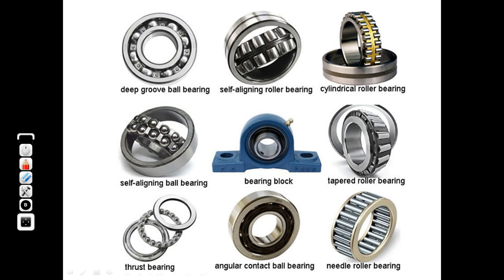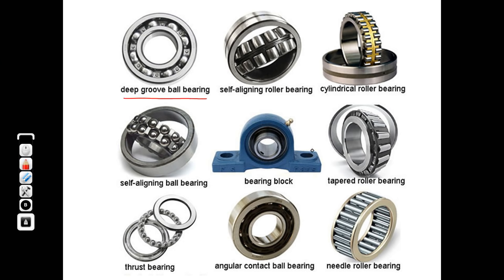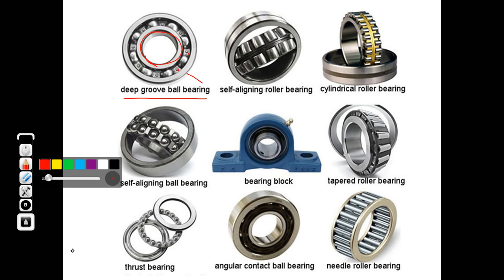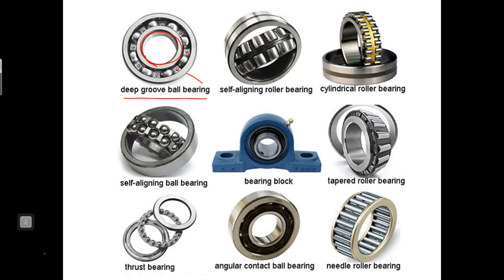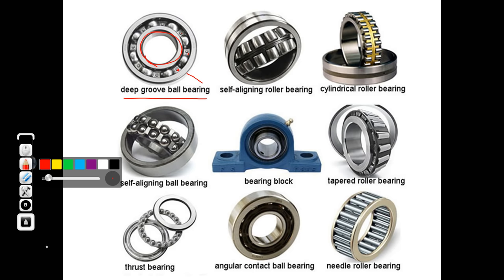This last slide goes through all types of bearings with real images. Deep groove ball bearing — inner race mostly rotating while outer is stationary — with the separator or cage retainer part visible. Next is self-aligning bearing, as discussed. Cylindrical roller bearing, where the rolling elements are straight cylinders, can also be observed in real images.